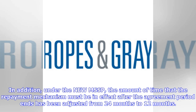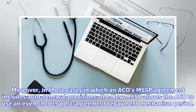Under the new MSSP, the amount of time that the repayment mechanism must be in effect after the agreement period ends has been adjusted from 24 months to 12 months. Moreover, in cases where an ACO's MSSP agreement includes auto-renewal provisions, the new MSSP allows the ACO to use an even shorter post-agreement repayment mechanism period.